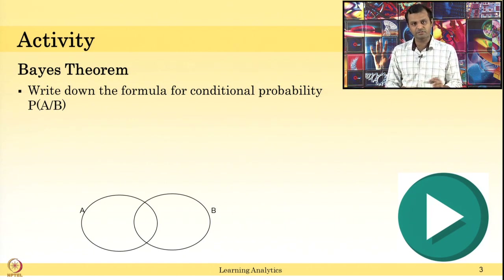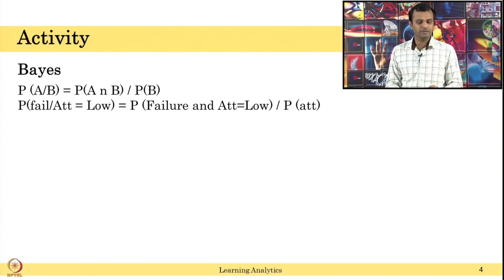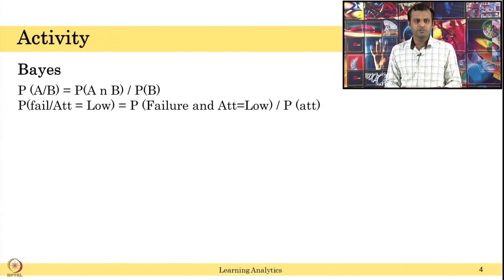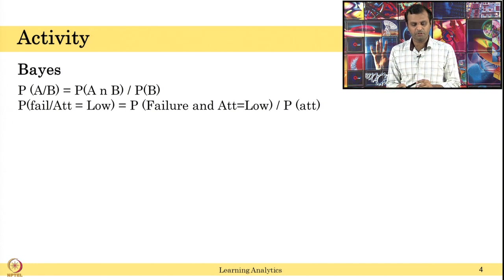Using this Venn diagram, intersection, joint — can you write the conditional probability formula for these two dependent events? Bayes theorem starts with this conditional probability, that is: probability of A given B is the probability of A and B occurring together divided by the probability of B occurring. For example, if I want to know the probability of a student failing the exam if attention is low, that means probability of failure and attention low has to occur, given the probability of attention.